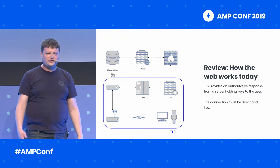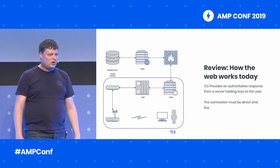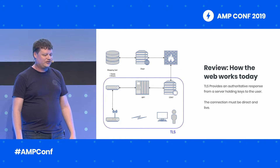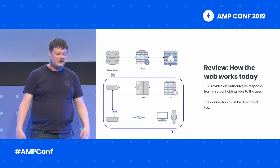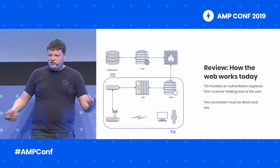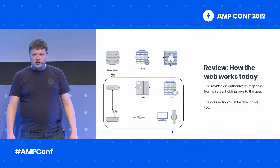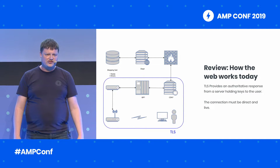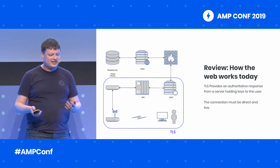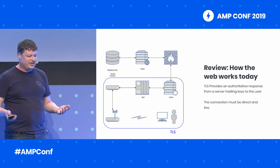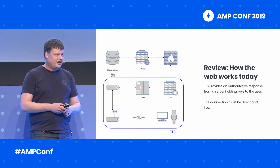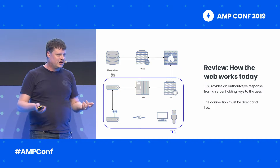TLS, also known as HTTPS, requires a real-time connection between a user all the way to a server processing and possessing private keys for that domain name. The AMP cache can't provide that real-time TLS connection, as it doesn't possess private keys for any domain names except google.com. Therefore, the AMP cache URLs must be on google.com.